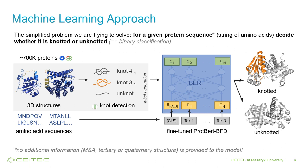This model was originally trained on the masked language modeling task, which means that it already has some understanding of proteins, and we should be able to fine-tune it to our specific use case. The model takes an amino acid sequence as input and gives us back the probability of it being knotted or unknotted.